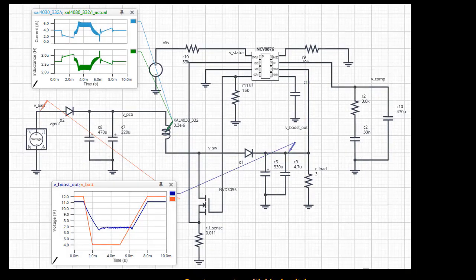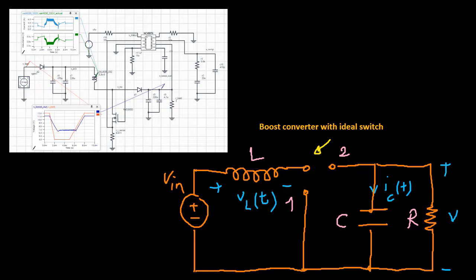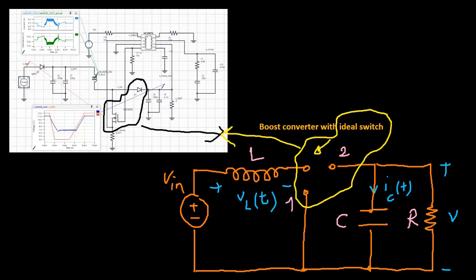A boost converter is another well-known switched mode converter that is capable of producing a DC output voltage greater in magnitude than the DC input voltage. In these circuits, the switch is practically realized by using a MOSFET and diode.